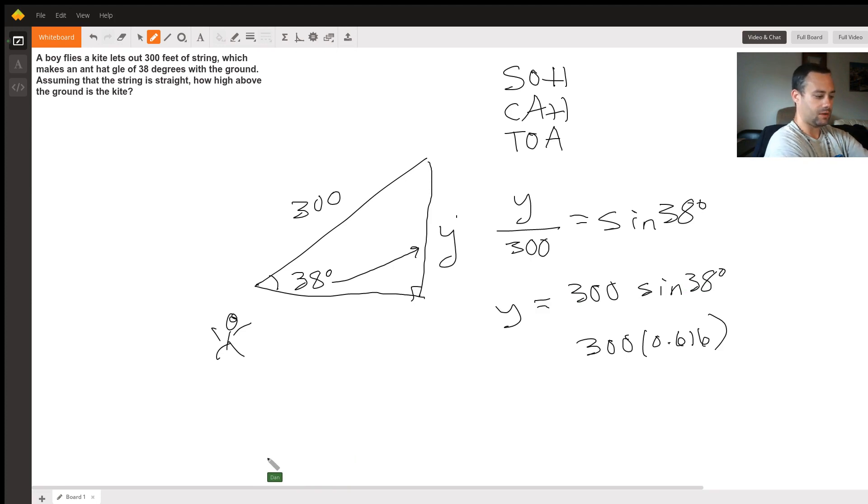Now times 300 in my calculator, so approximately 184.7. I'll round it up, approximately 184.7 feet. That's not exact. I rounded this one up from this one.